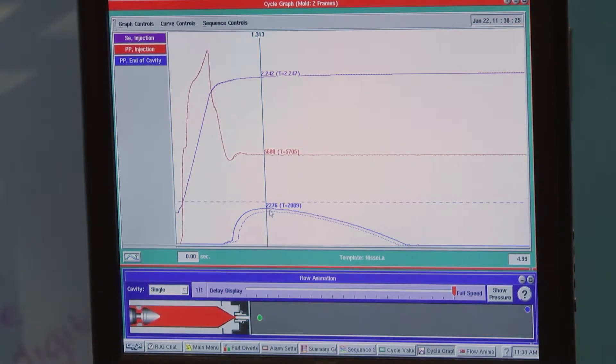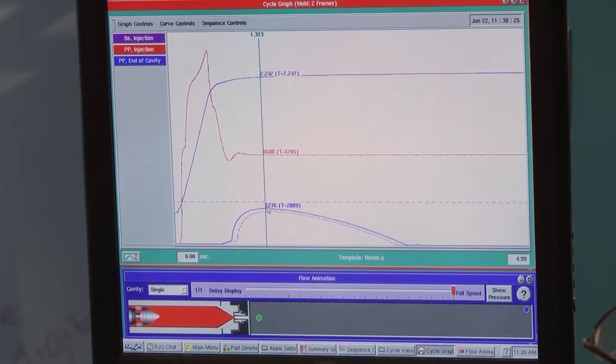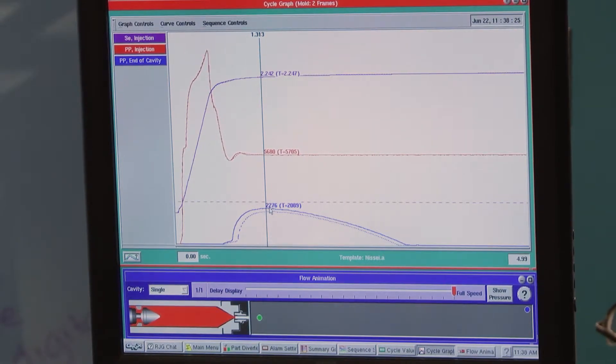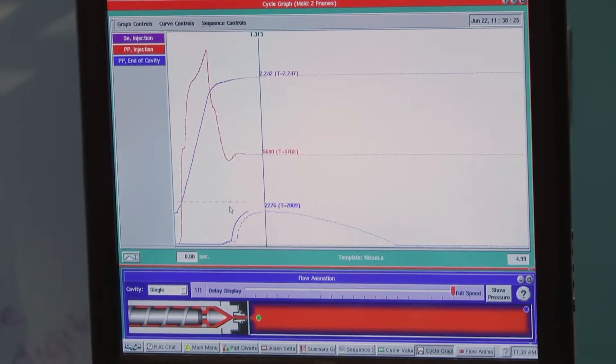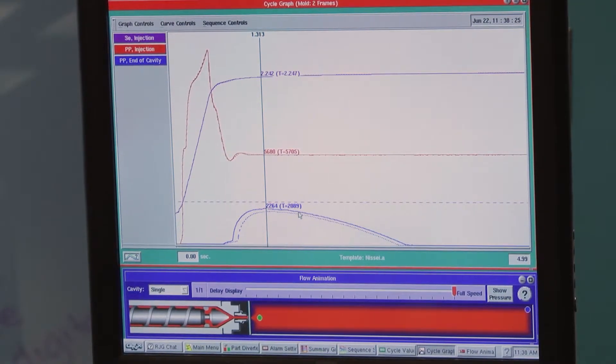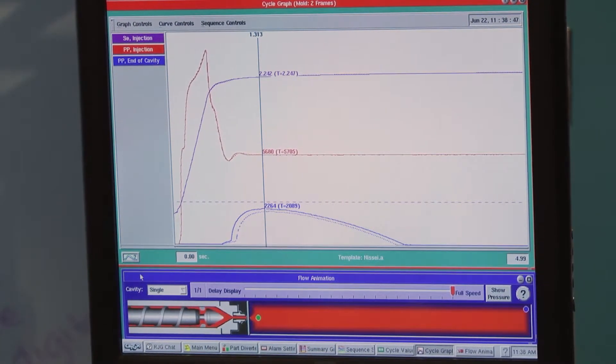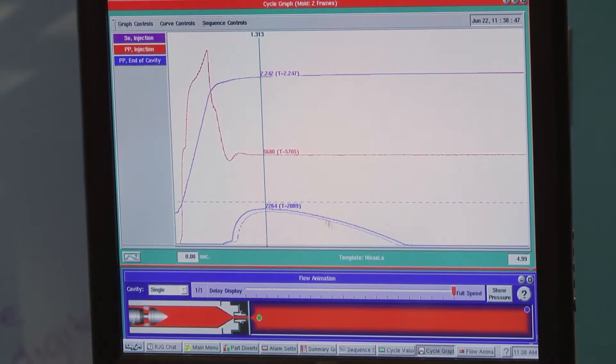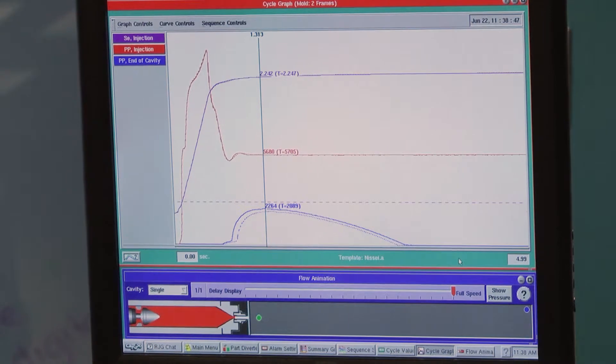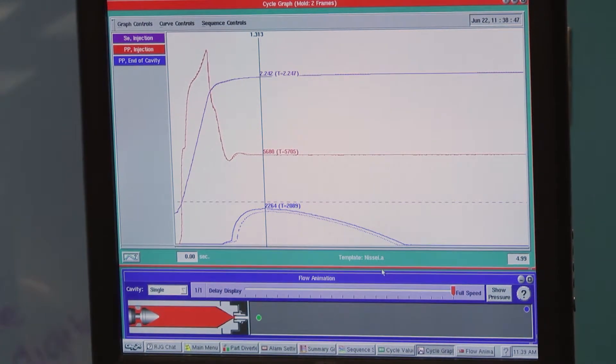We pack to a pressure, we're packing to right around 2,200 PSI, which happens to be where this particular part runs the best. And then we'll see that as the plastic cools and shrinks away from the cavity, it depressurizes until it reaches zero. So let's look at some of the things that we can see in this curve.